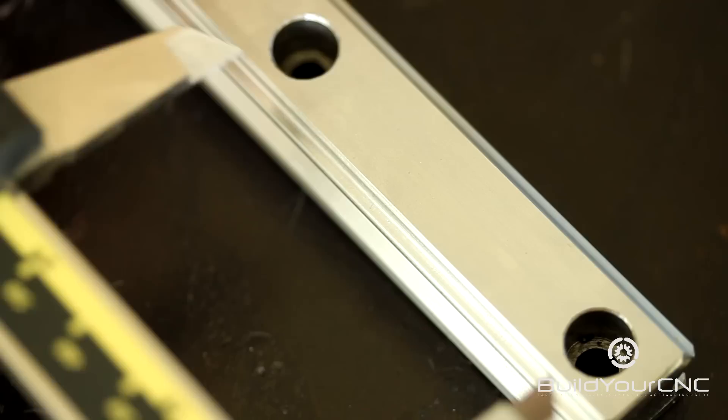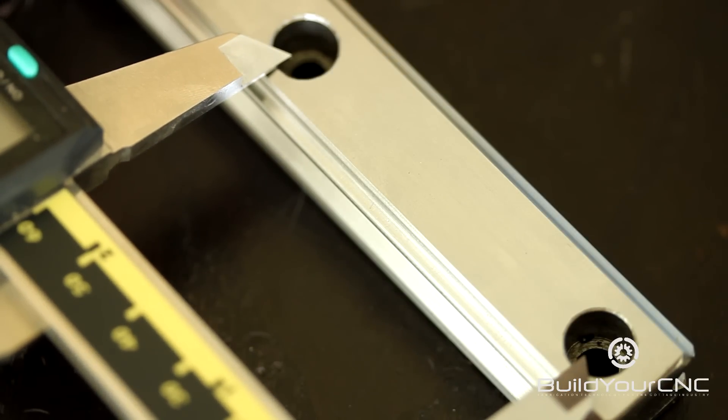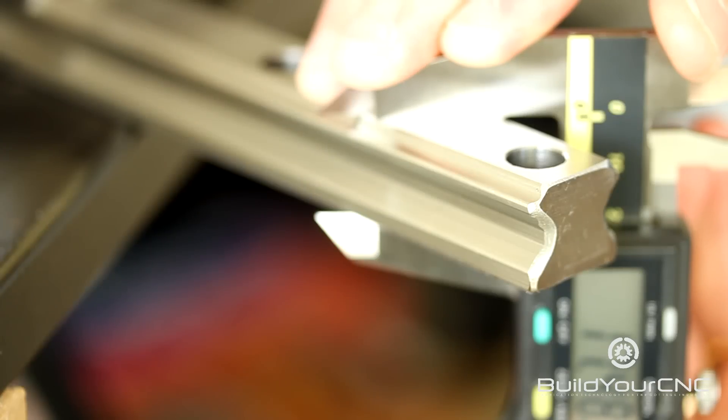which would be the full length. The dimension between each hole is 60mm. The height or thickness of the rail is 17.5mm.